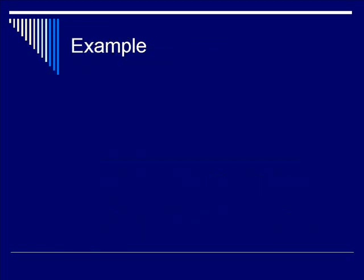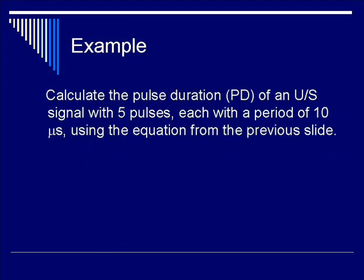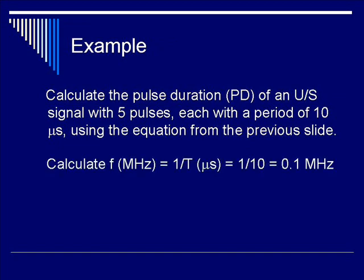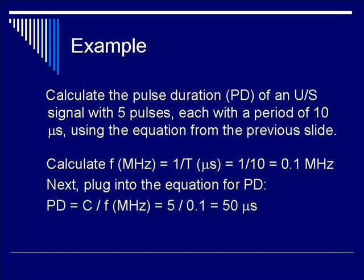Example. Calculate the pulse duration of an ultrasound signal with five pulses, each with a period of 10 microseconds. Using the equation in the previous slide, you know that the frequency f is 1 over t. 1 over 10 microseconds gives you a frequency of 0.1 megahertz. Now, plug this into the equation for pulse duration, which is c over the frequency. You have five pulses over each pulse of 0.1 frequency, and you have 50 microseconds as your pulse duration.